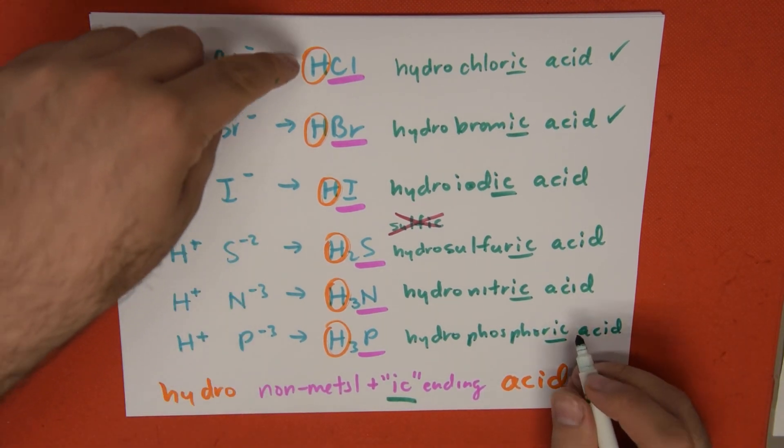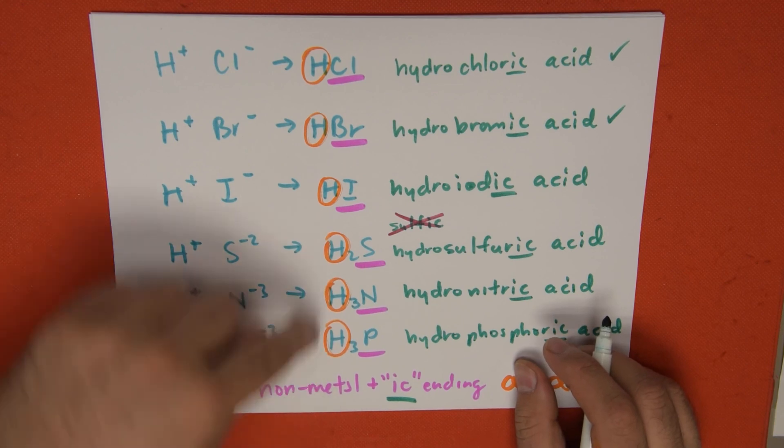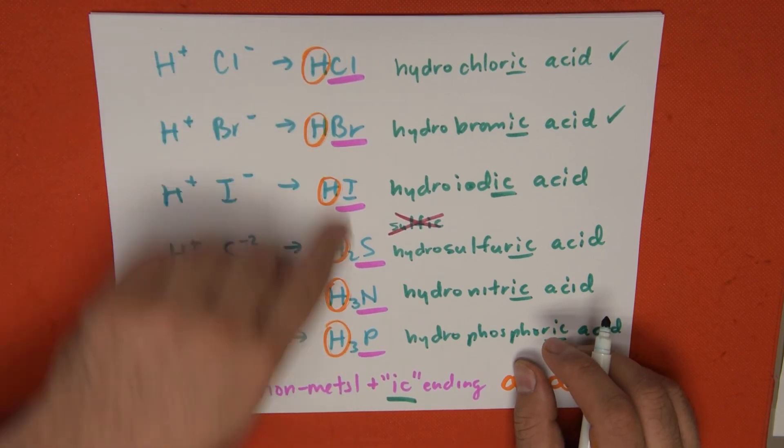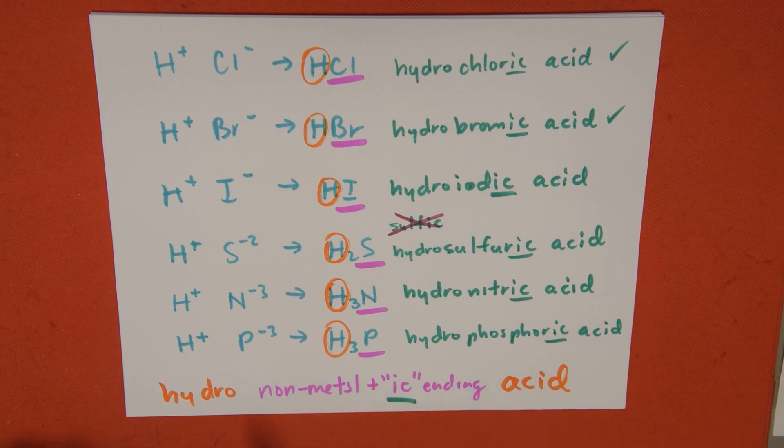How do we recognize these? They only have hydrogen as a cation and one type of non-metal or metalloid as the anion. The naming style is hydro, the name of the non-metal with -ic ending, acid.